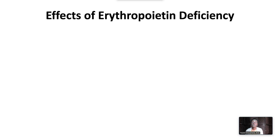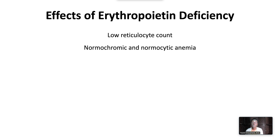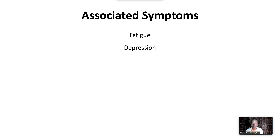The effects of erythropoietin deficiency are low reticulocyte count and anemia that is normochromic and normocytic. Microcytic anemia, if present, can be a sign of iron deficiency. Anemia of kidney disease is associated with fatigue, depression, dyspnea, and decreased exercise tolerance.